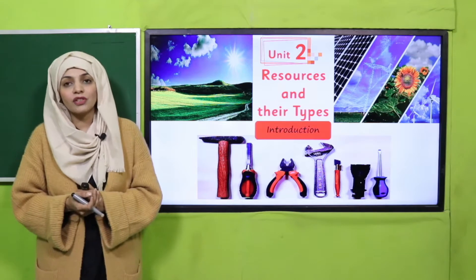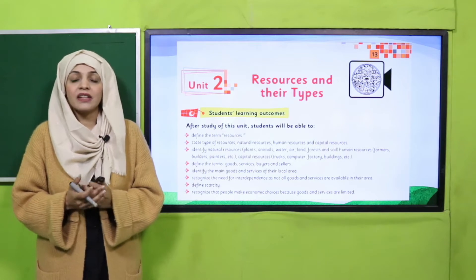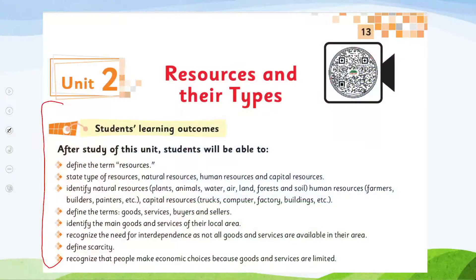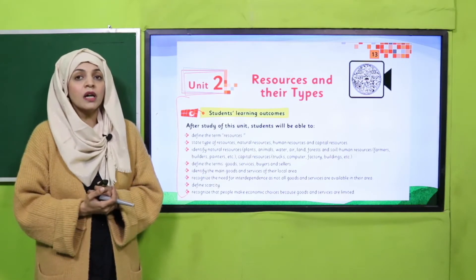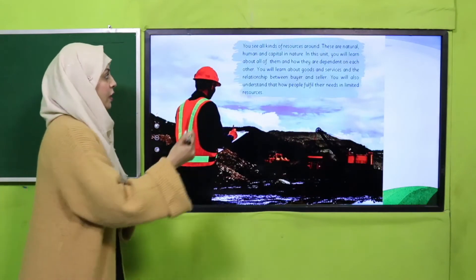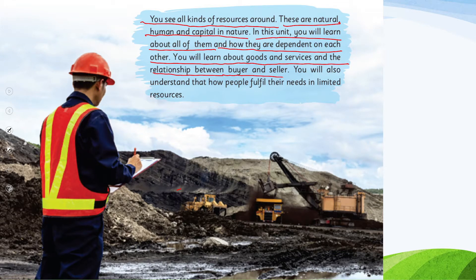Today I will give you a complete introduction of this unit. On page number 13 there are student learning outcomes, which are for the parents and teachers to understand that by the end of this unit, students will be able to cover these objectives. In this unit you will see all kinds of resources — natural, human, and capital — and learn how they are dependent on each other. You will learn about goods and services, the relationship between buyer and seller, and how people fulfill their needs with limited resources.